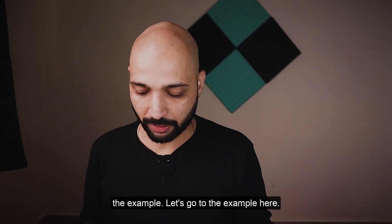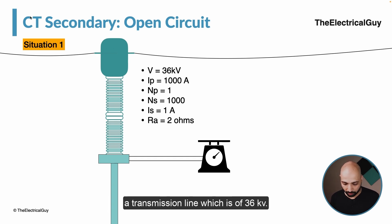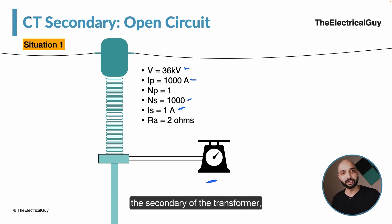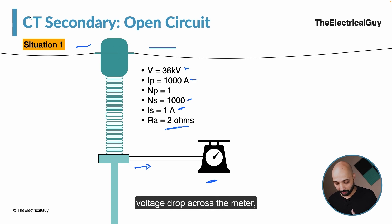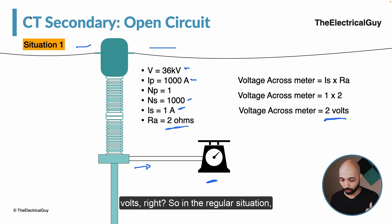Let's look at a numerical example. Situation one — a current transformer connected to a 36 kV transmission line. Primary current is 1000 A, primary turns is 1 (single turn), secondary turns is 1000, secondary current is 1 A, and the meter connected to the secondary has a resistance of 2 ohms. The voltage drop across the meter is simply secondary current times resistance: 1 A × 2 Ω = 2 volts. That is perfectly fine.